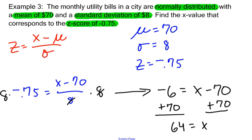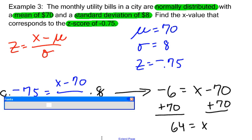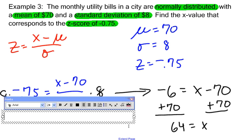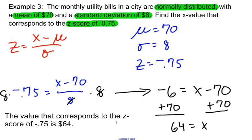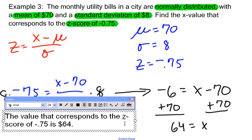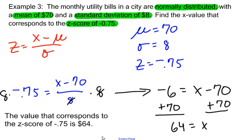So if I want to answer this question, I would want to use a complete sentence, since this is a word problem. The question says, find the value that corresponds to the z-score of negative 0.75. So I could say, the value that corresponds to the z-score of negative 0.75 is 64, and in this case, $64. Since we're using monetary units, $64 is what I would want to go with.